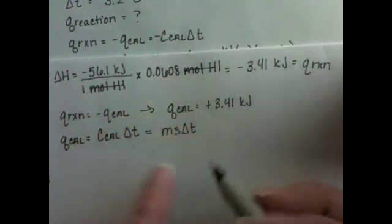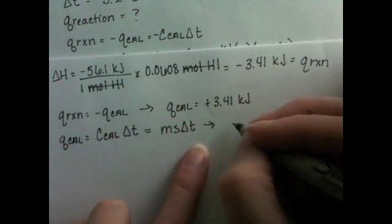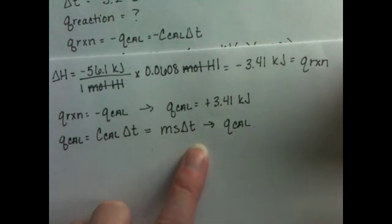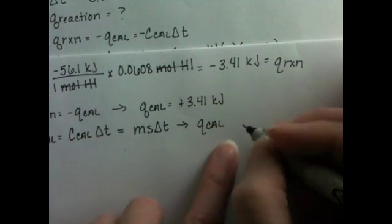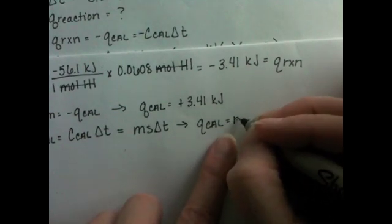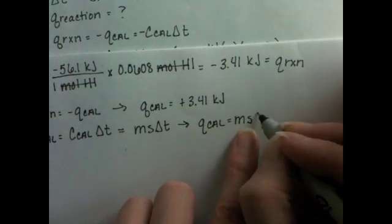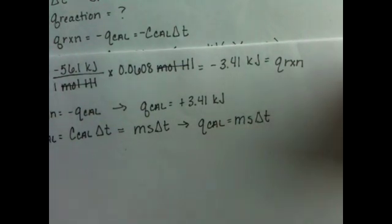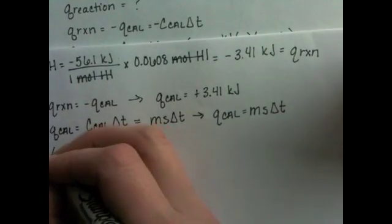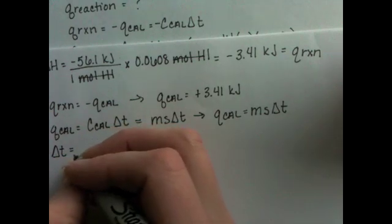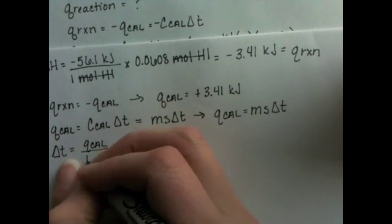In this problem, the only thing that we don't know here is ΔT. So we can take this equation, Qcal, the heat absorbed by the calorimeter, which we know to be 3.41, and say that's equal to the mass of the solution times the specific heat of the solution, both of which we know times the change in temperature. Isolating variables, you know how I like to do my math. So we're going to get Qcal over MS.